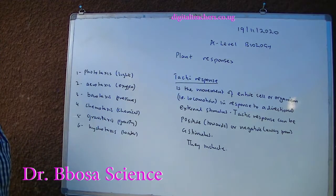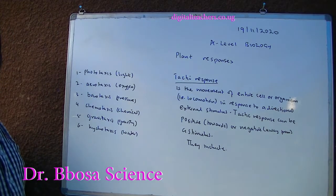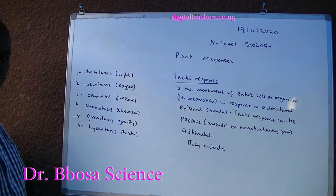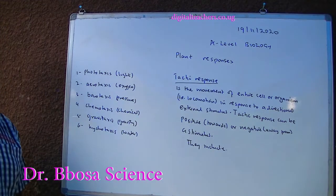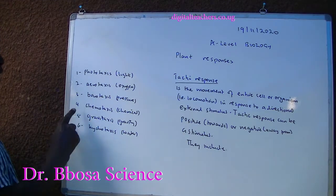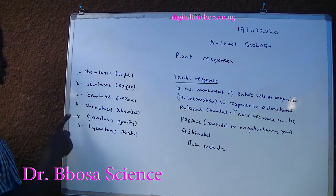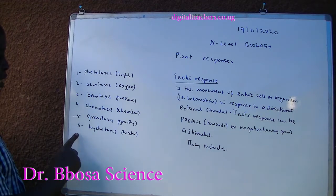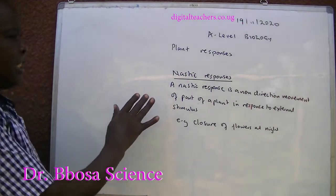Tactic response is the movement of an entire cell or organism (locomotion) in response to a directional external stimulus. Tactic response can be positive — towards — or negative — away from — a stimulus. They include: one, phototactic — light; two, aerotactic — oxygen; three, barotactic — pressure; four, chemotactic; five, gravitactic; six, hydrotactic — water.